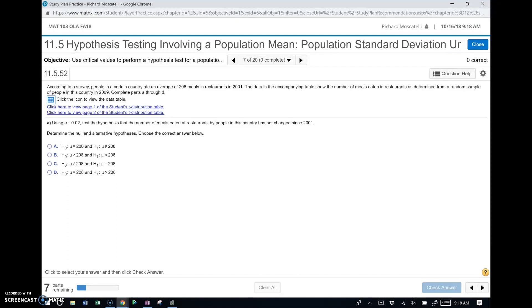Alright, so let's give it a look. It says, according to a survey, people in a certain country ate an average of 208 meals in restaurants in 2001. The data in the accompanying table show the number of meals eaten in restaurants as determined from a random sample of people in this same country in 2009. And it says complete parts A through D.